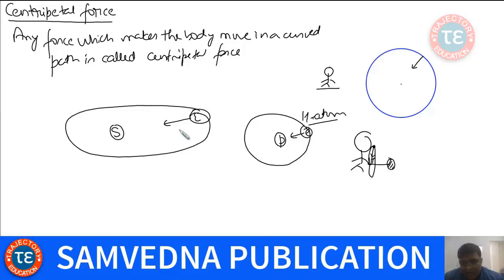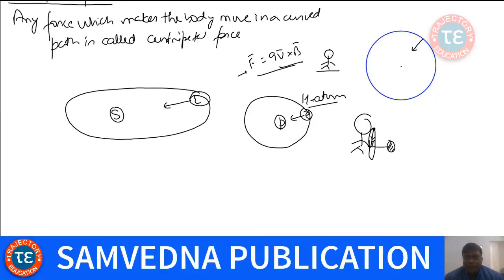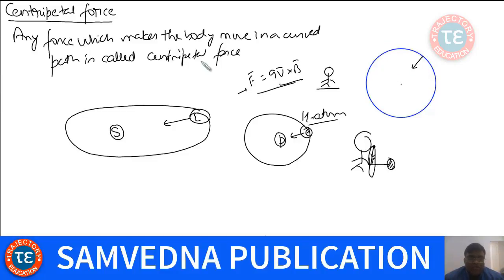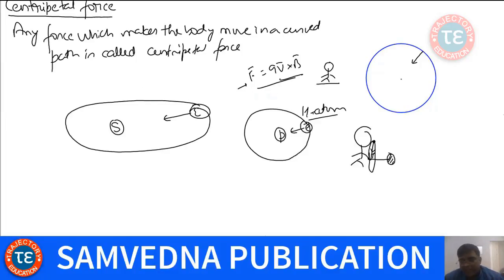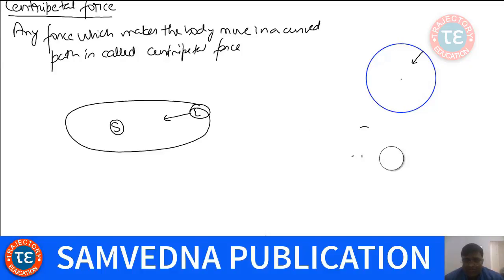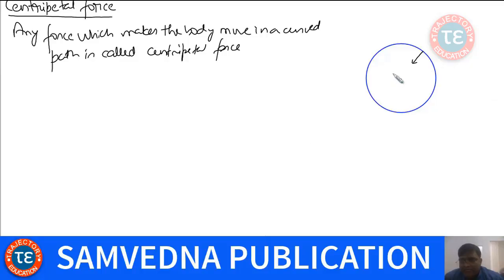If you release a charged particle with certain velocity in a magnetic field, that charged particle undergoes circular motion. Which force makes the body move in a curved path there? It is the Lorentz force (qv × B) — the magnetic force makes the charged particle move in a curved path. So any force which makes the body move in a curved path is called centripetal force. In the case of circular motion, the centripetal force is directed toward the center, and centripetal force equals mass times centripetal acceleration, i.e., F = mv²/r.